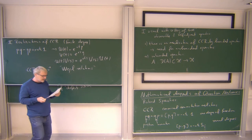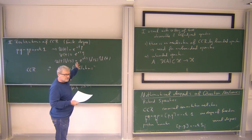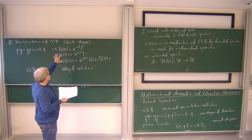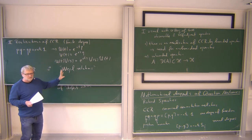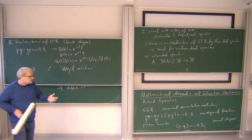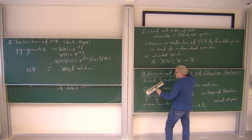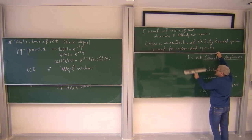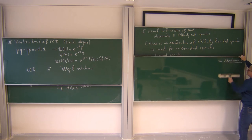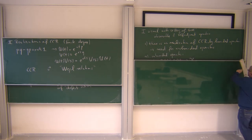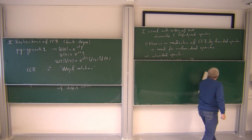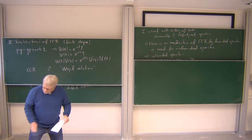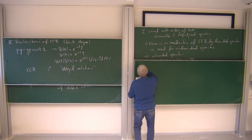The Weyl relations correspond to the canonical commutation relations but in a form that is mathematically much nicer. The question is: how many realizations do I have of this? Then there is the famous theorem of von Neumann, which is about the one-dimensional or finite-dimensional case, saying essentially that this is unique: there is essentially only one irreducible representation, and in general everything is a direct sum of such basic realizations.